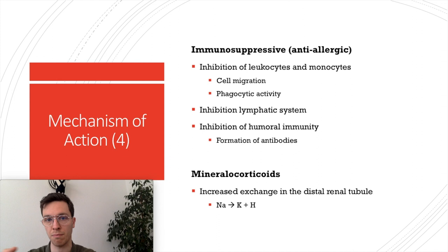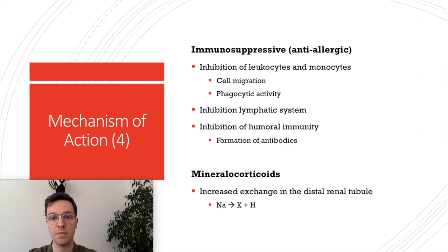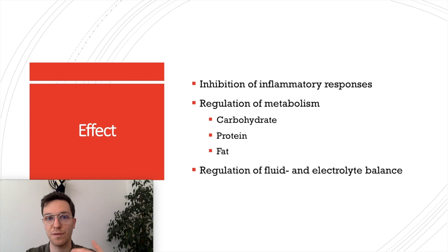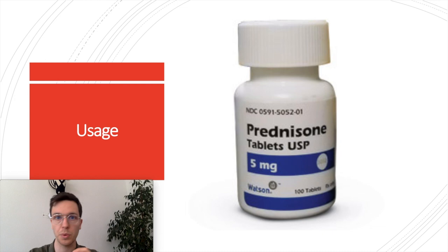Prednisone also has an immunosuppressive effect, mostly called the anti-allergic effect. It does this by inhibiting the migration properties of leukocytes and monocytes and decreasing their phagocytic activity. There is also inhibition of the lymphatic system and inhibition of humoral immunity through decreased antibody formation. Lastly, prednisone has minor mineralocorticoid effects, leading to increased exchange of sodium for potassium and hydrogen in the distal renal tubules. Overall this gives prednisone the effects of inhibiting inflammatory processes, regulating metabolism of carbohydrates, fats and proteins, and regulating fluid and electrolyte balance.